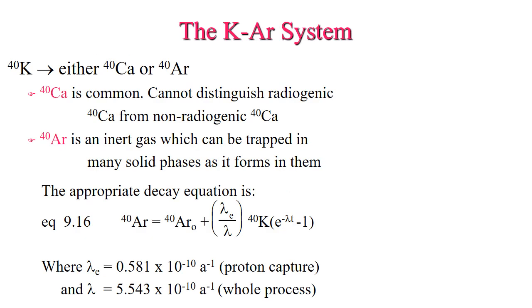The first radiogenic isotope system we'll look at is the potassium-argon system, where potassium-40 decays into either calcium-40 or argon-40. Calcium-40 is the most common product, but we can't distinguish between radiogenic calcium-40 and non-radiogenic calcium-40 since it's a stable isotope of calcium. Argon-40 is an inert gas that can be trapped in many solid phases as they form. When a rock is hot, all the argon escapes, resetting the radiometric clock and removing all the daughter product.